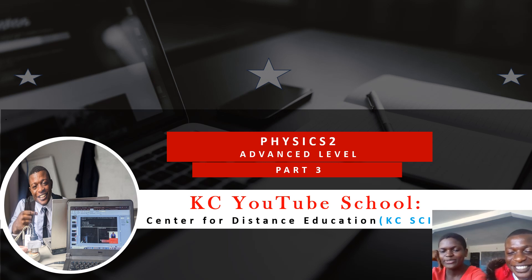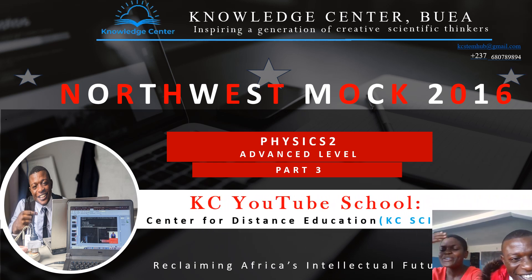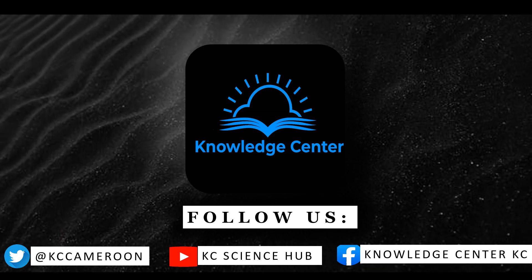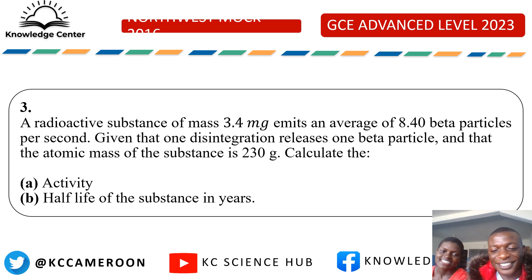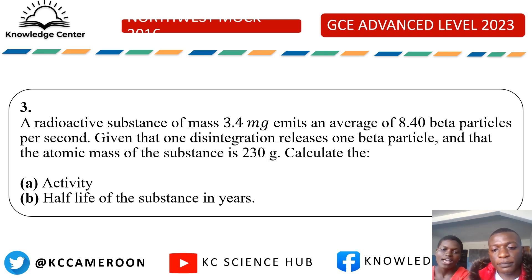Hey guys, so today we are going to begin the Northwest Mob 2016 part 2, part 3. The problem says a radioactive substance of mass 3.4 milligrams emits an average of 8.40 beta particles per second. Given that one disintegration releases one beta particle and that the atomic mass of the substance is 230 grams, calculate the activity and the half-life of the substance.